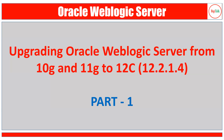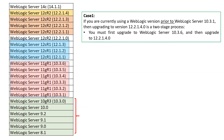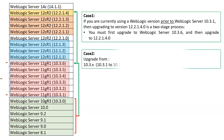In part two we will see the execution of the upgrade of WebLogic Server 10.3.6 to 12.2.1.4. There are different versions of WebLogic Server and different cases depending on which version you are using. Case one is if you are currently using a WebLogic version prior to WebLogic Server 10.3.1, such as 10.3.0, 10.0, 9.2, 9.1, etc. In that case, to upgrade to 12.2.1.4 there is a two-stage process: first upgrade to 10.3.6, then upgrade to 12.2.1.4.